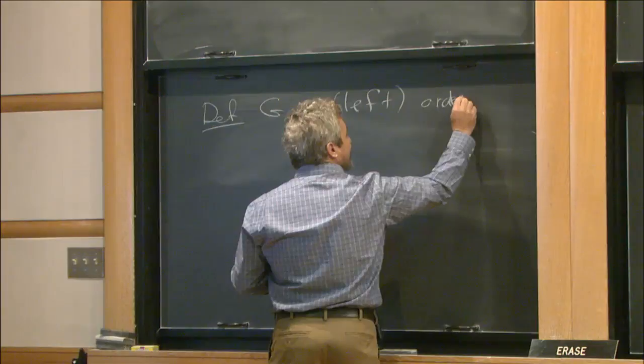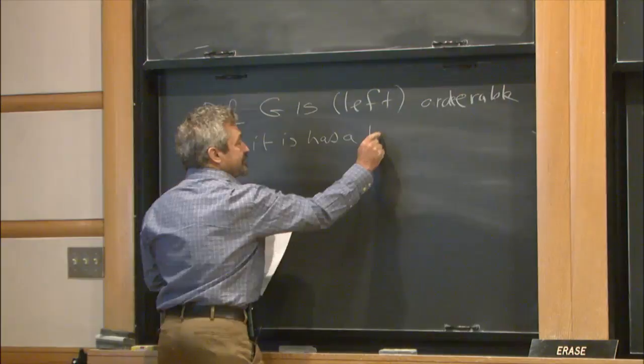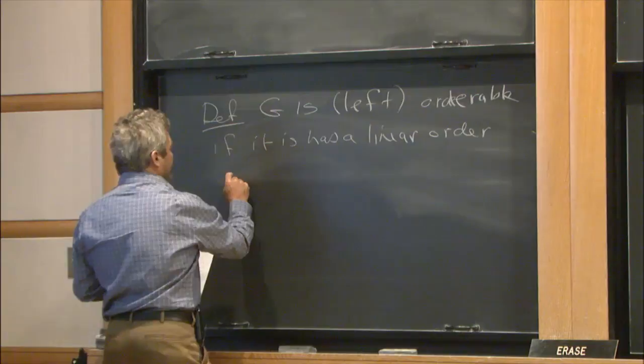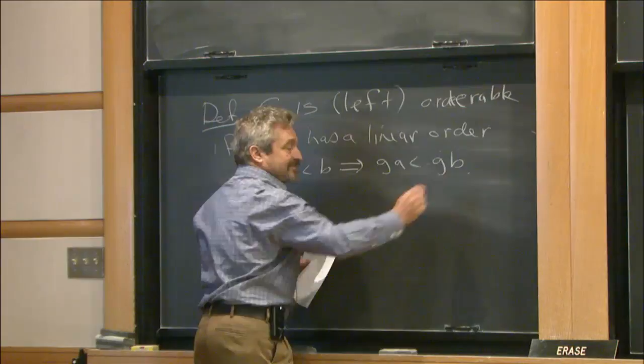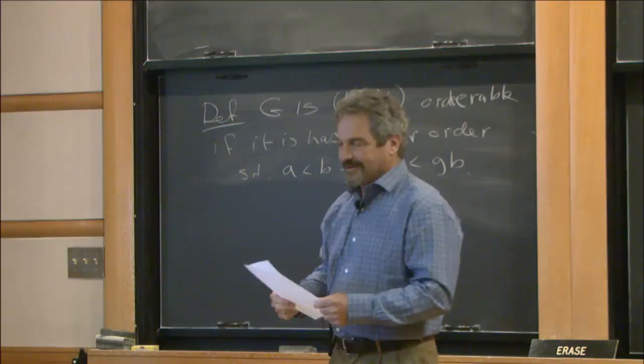Say that G is left orderable — except I won't say that because it's equivalent to being right orderable — if it has a linear order which is invariant under the group action. So A less than B implies GA less than GB. I think this was an obscure corner of group theory until recently, but now apparently has something to do with Three Manifolds.